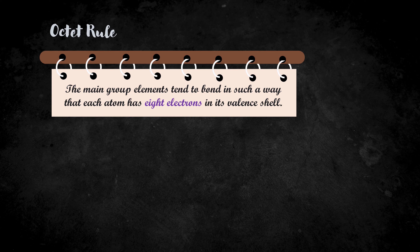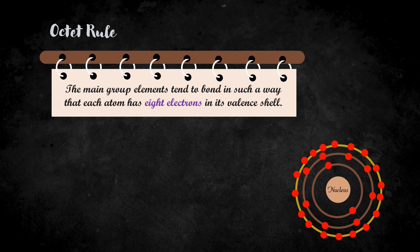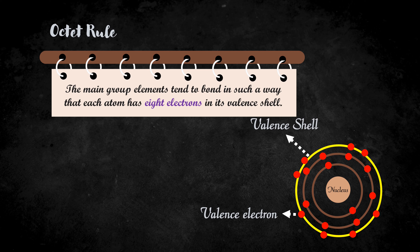While learning about the number of electrons at each shell, an important rule to consider is the octet rule. The rule states that the main group elements tend to bond in such a way that each atom has 8 electrons in its valence shell. If we consider the third shell to be the final shell of an atom, then the third shell will tend to occupy only 8 electrons. The electrons in the final shell are called valence electrons and the final shell is called the valence shell. Now let's consider an atom whose valence shell has 7 electrons. This shell will always be ready to accept an electron so that it can satisfy the octet rule. So a hole is considered to be present there.